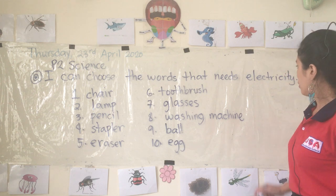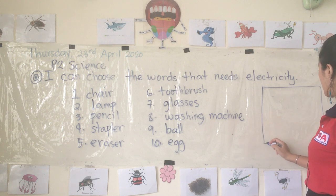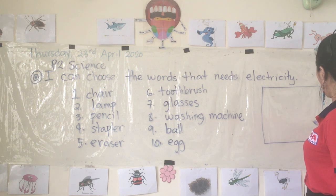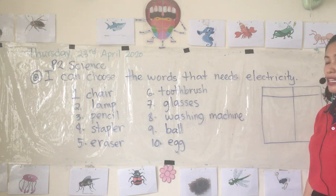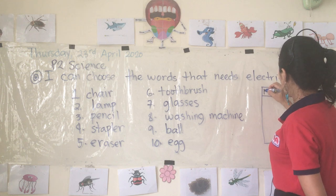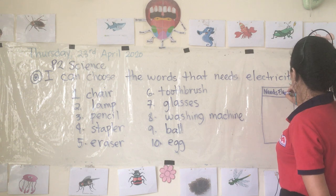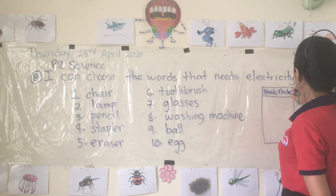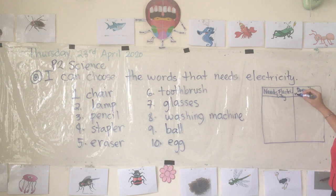We are going to write down the things that need electricity and the things that don't need electricity. So here we will write 'needs electricity' on one side, and on the other side, 'doesn't need electricity.'